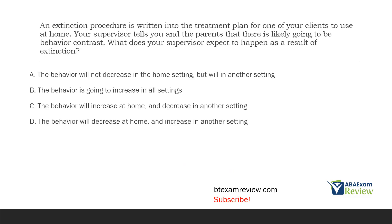An extinction procedure is written into the treatment plan for one of your clients to use at home. Your supervisor tells you and the parents that there is likely going to be behavior contrast. What does your supervisor expect to happen as a result of extinction? We are using extinction in the home and the supervisor believes that behavior contrast is going to be a result. So if we start with the extinction procedure, what do we expect to happen? We expect behavior to probably temporarily increase first, go through an extinction burst, but ultimately decrease. Extinction is a method we use to decrease behavior.